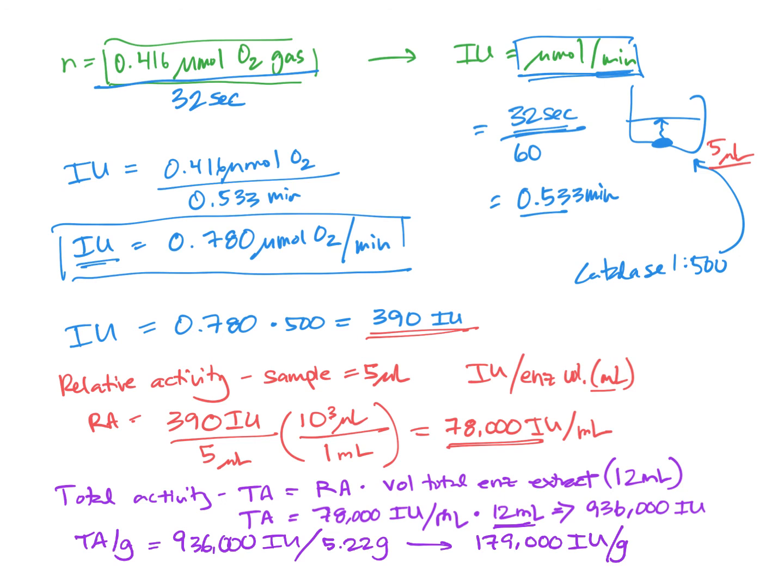So we've calculated a lot of things here. First of all, we calculated the total volume or the total number of moles, rather, of oxygen gas that were produced by our catalase sample. And then in order to really calculate the international units, that is the micromole per minute of enzyme activity, we had to include the amount of time that it took for those moles of oxygen to be produced. That is the amount of time it took to get from the bottom to the top of the hydrogen peroxide. So our international units, our activity, is 0.780 micromoles of oxygen per minute.